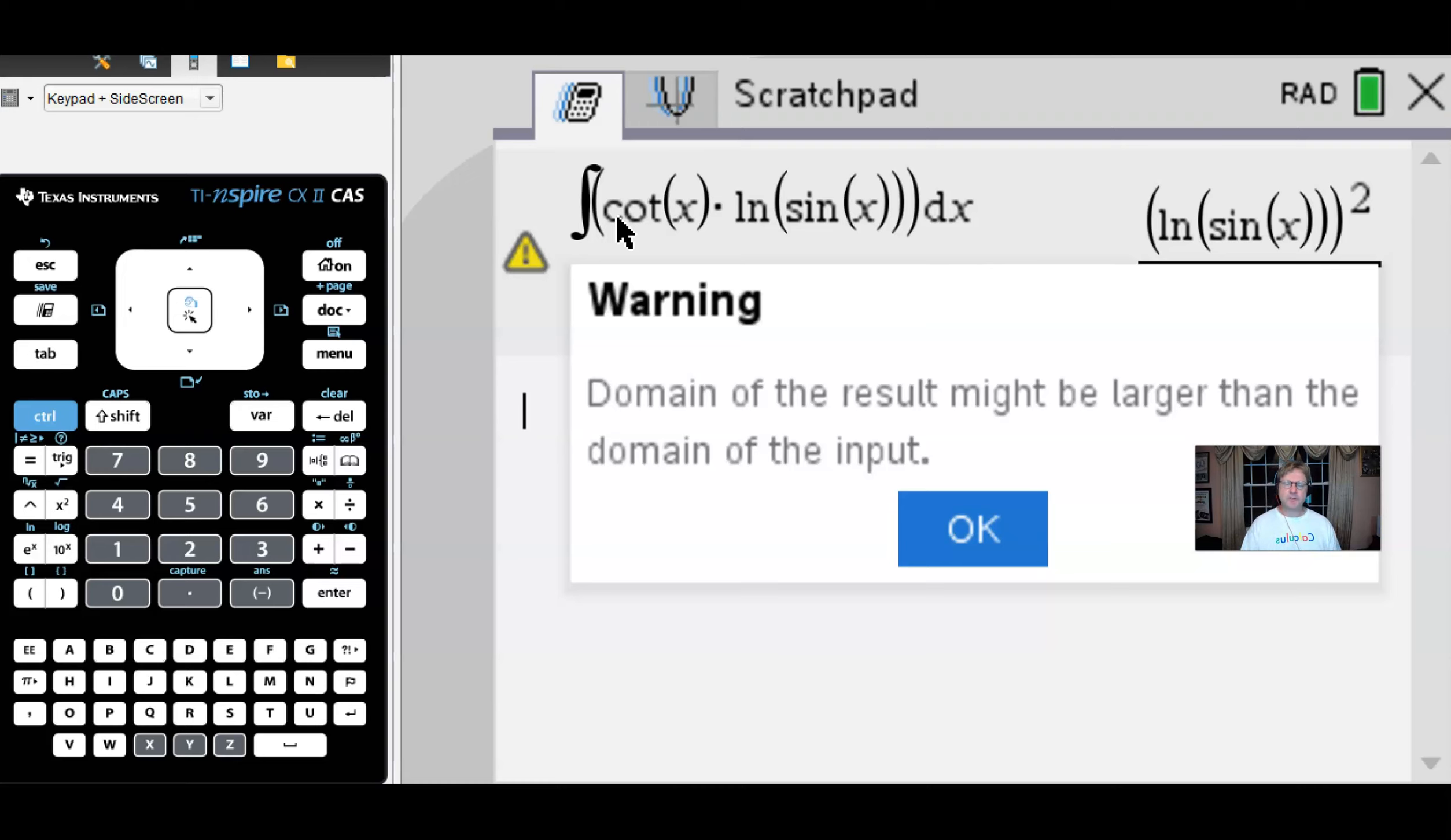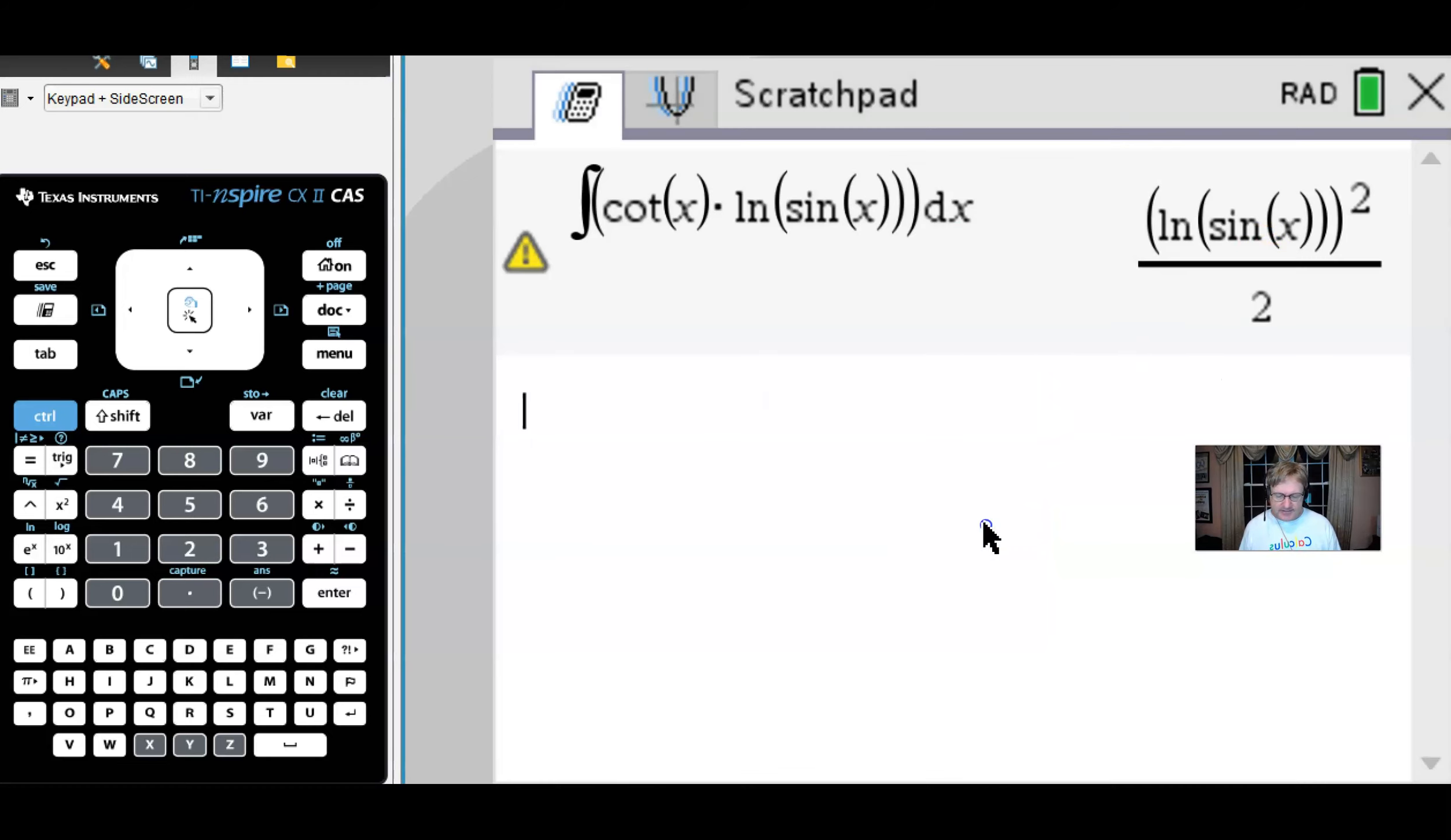But if you notice, our output doesn't quite have that same problem. We don't have a sine that's located in the denominator—in fact, we really don't have much of anything in the denominator. So there is a little bit of a discrepancy as far as the domain restrictions are concerned, but for the answer to our integral, we're good to go.